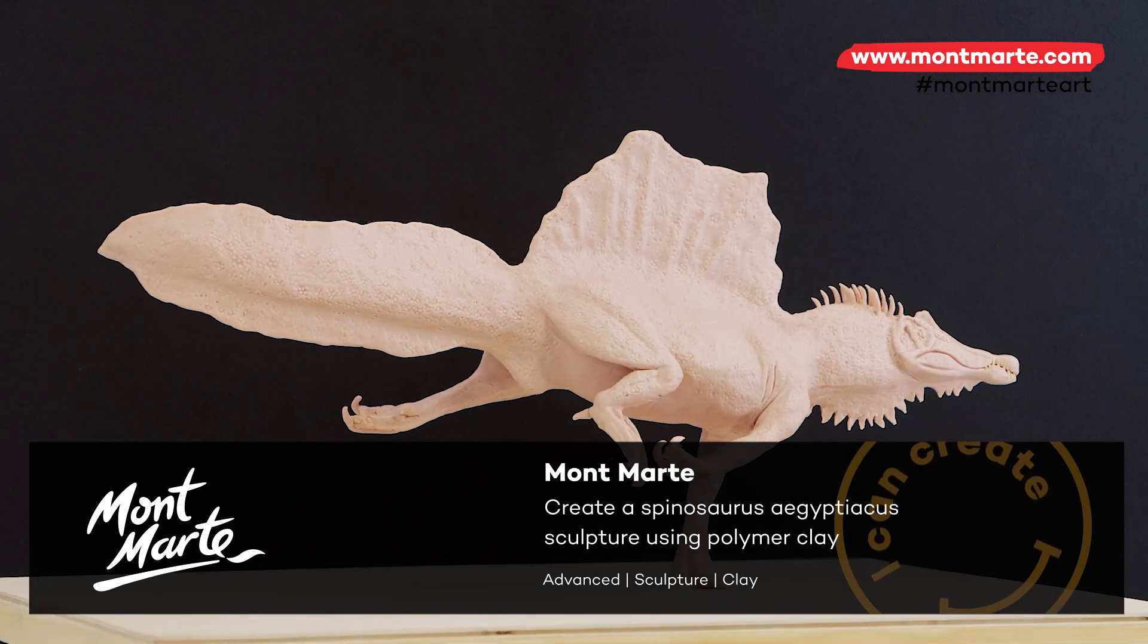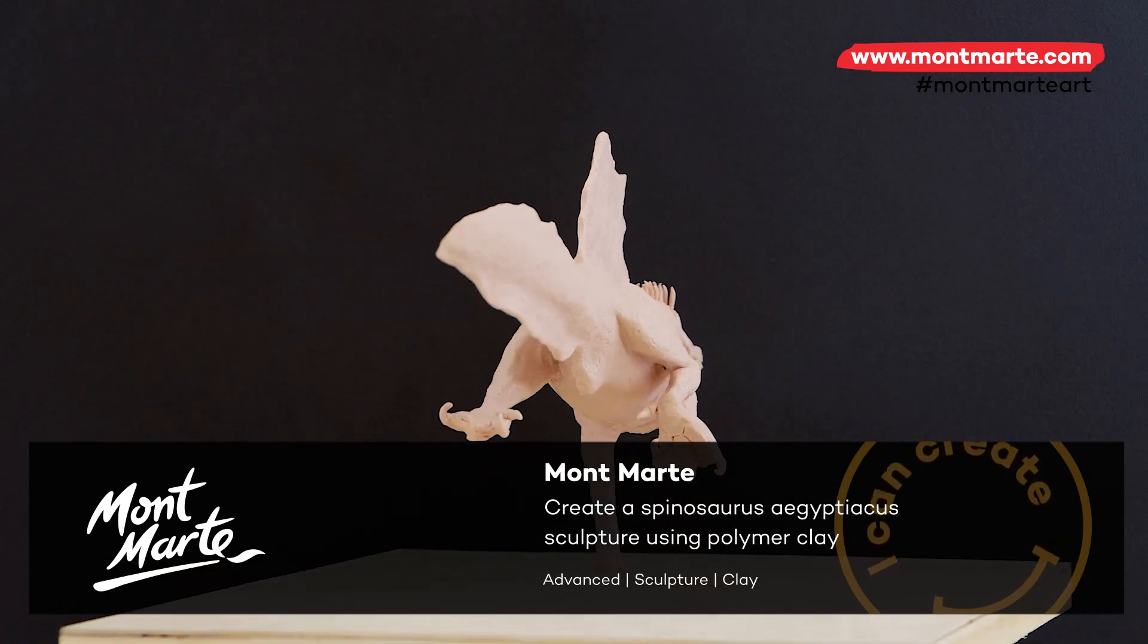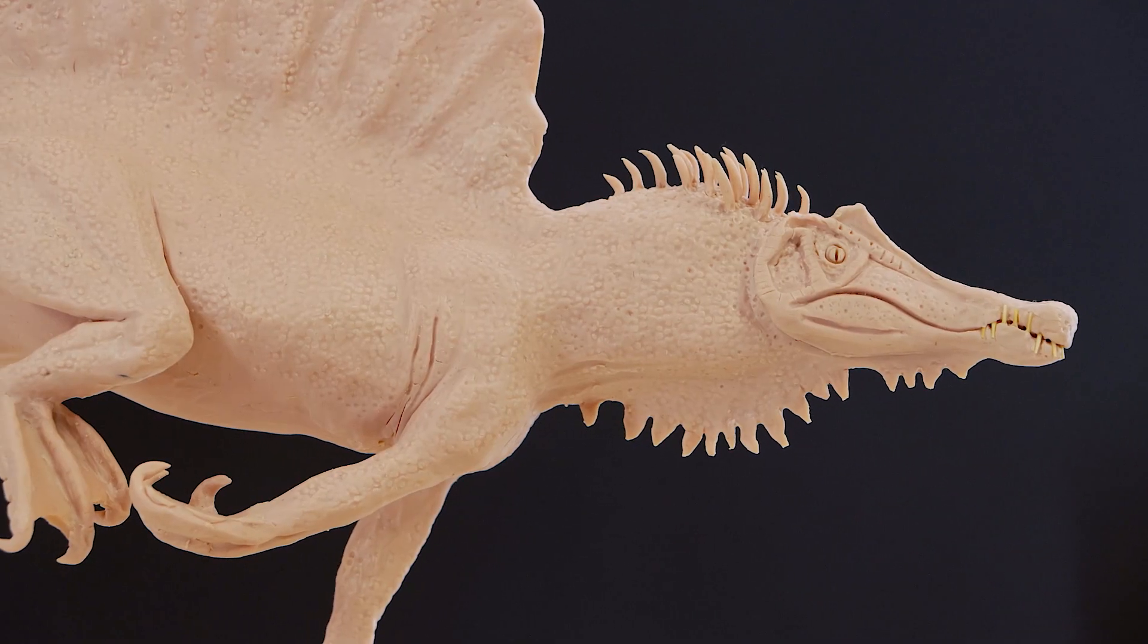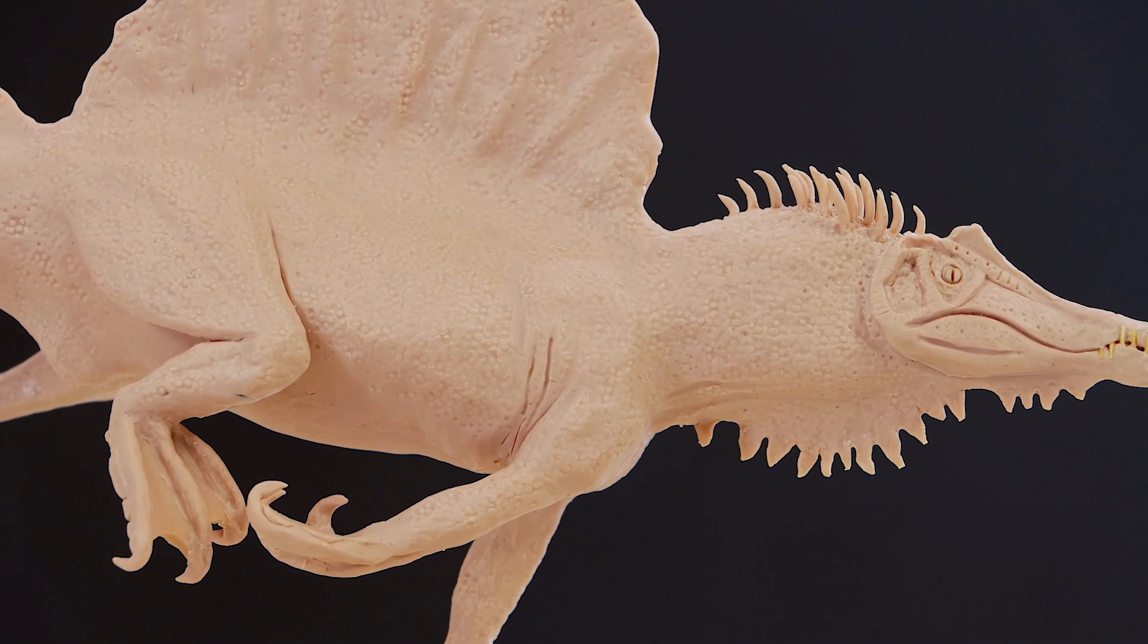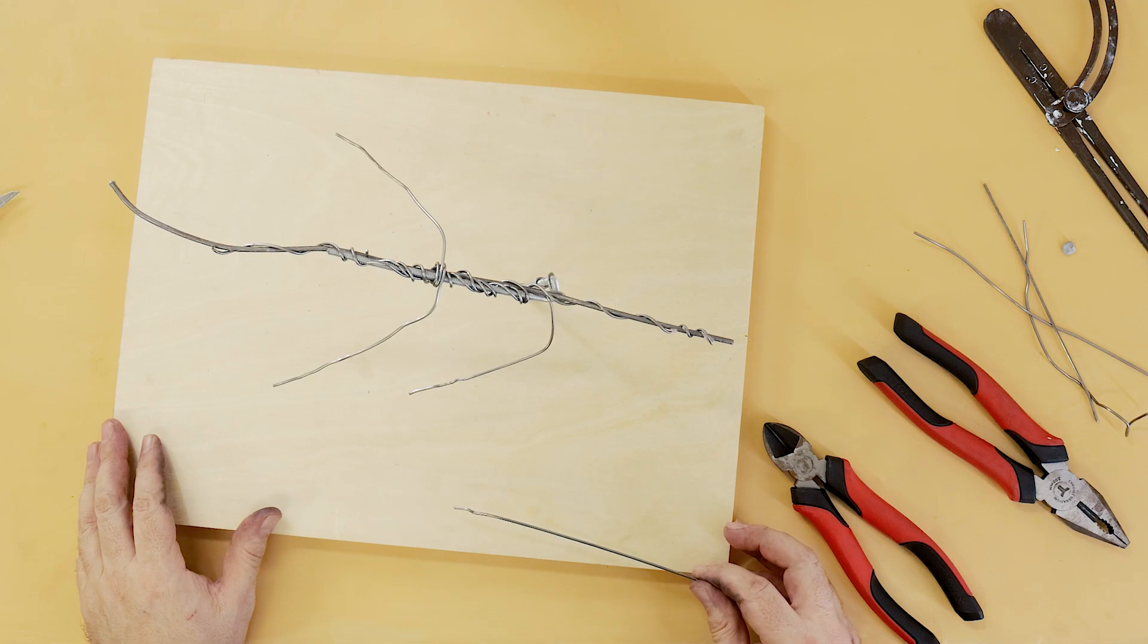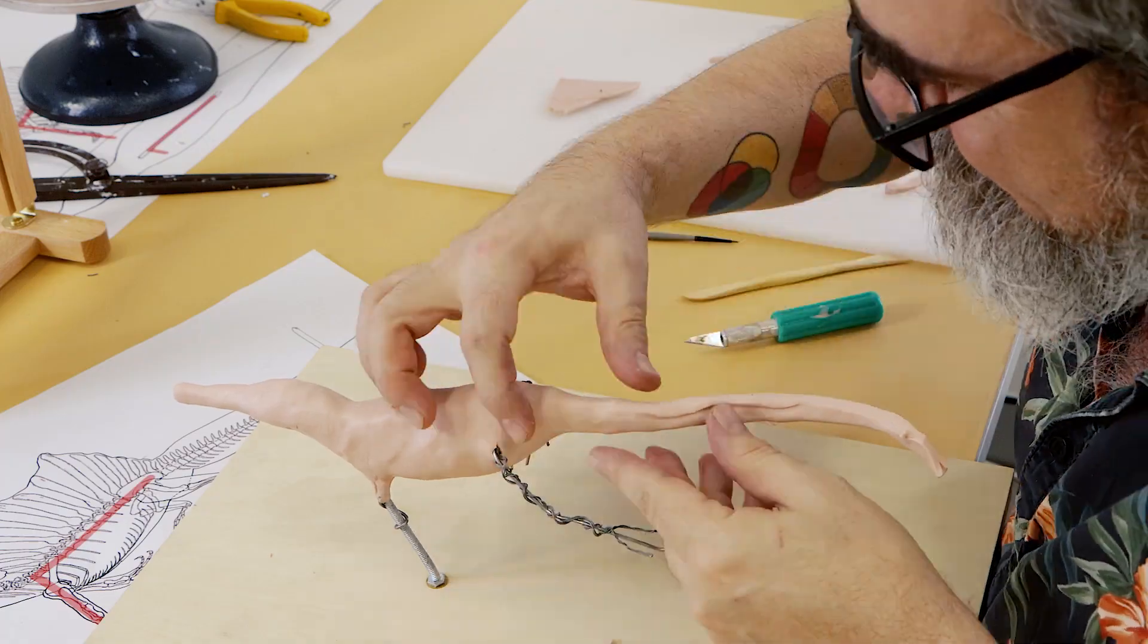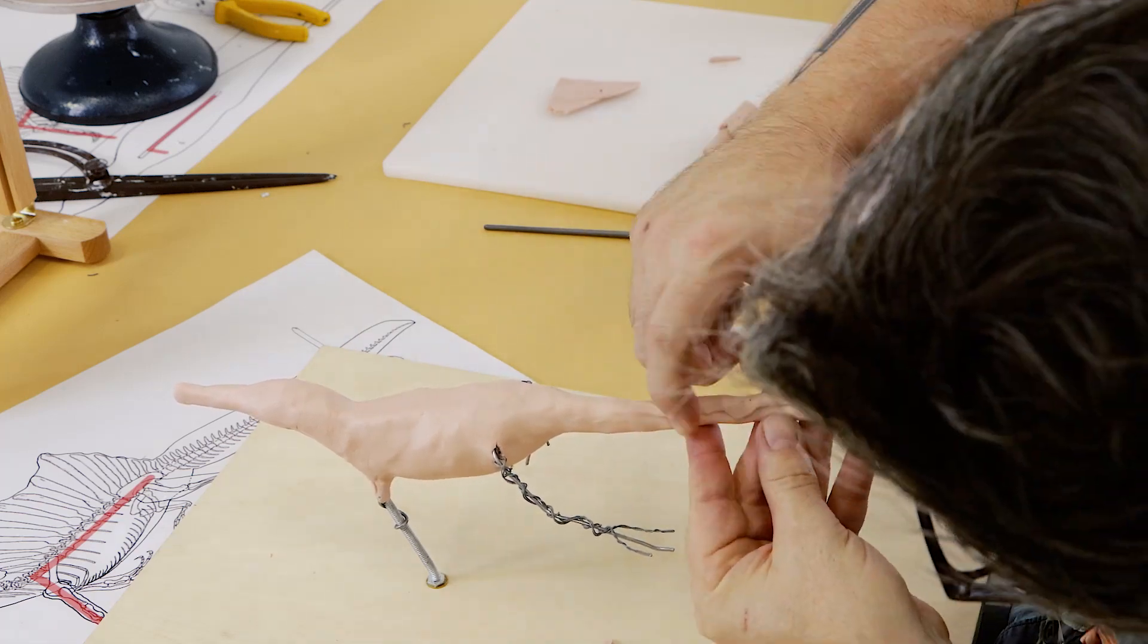Hello there! And thanks for joining us. We're really pleased to be bringing you another dinosaur sculpture. This here is the Spinosaurus aegyptiacus, and it walked and swam the earth approximately 100 million years ago, and it's been created with polymer clay.